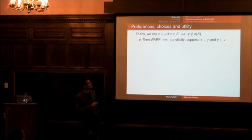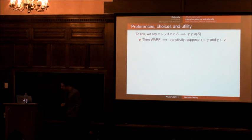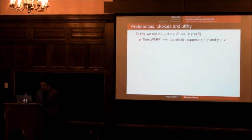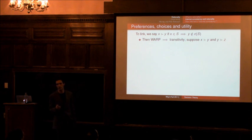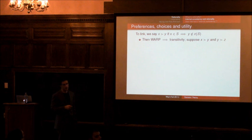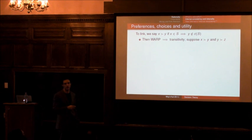So then, we can see that the weak axiom of revealed preference implies transitivity. And how do we see that? Does anyone else want to try to make the warp transitivity link? Okay. Is that the definition? Okay. Here's the definition. If x is preferred to y, y is preferred to z, then x is preferred to z. Yes, well that's correct. But how do you use the choice definition to prove that that's the case using the weak axiom of revealed preference?